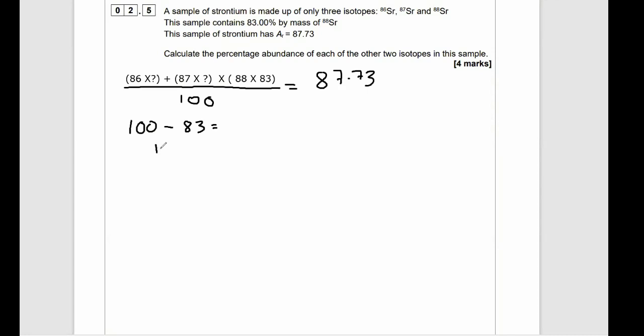Now, as we know the abundance of 88 is 83, then we know if we do 100 minus 83, we get 17% that's missing. And that 17% must be the sum of the abundances of SR86 and SR87. So we know the two missing abundances equal 17.